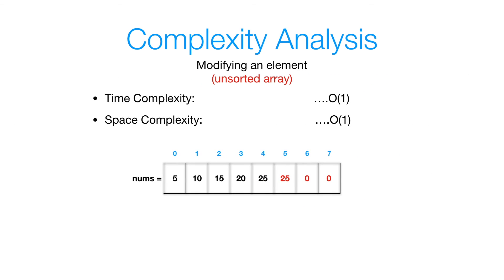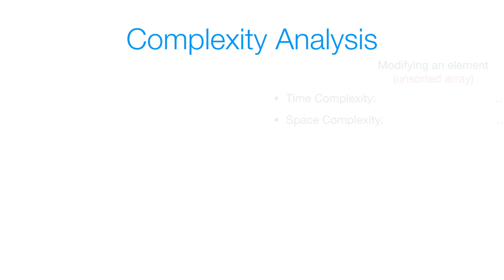So now let's move on to modifying an element in an unsorted array. Again, to modify an element in an unsorted array is going to be O of one or constant time complexity and O of one or constant space complexity. And simply just like we would insert an element into an array, modifying an element, in this case we want to modify the value 25 to 30. All we say is nums of five is equal to 30. And we've modified that element. So basically, that's a constant time operation and also a constant space operation.